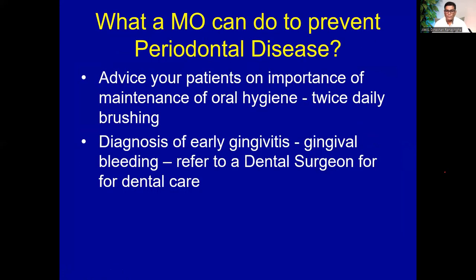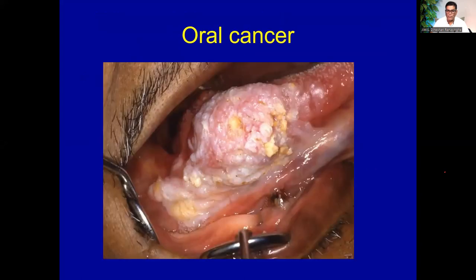What can we do as medical officers regarding periodontal disease? Advise your patients on the importance of maintaining oral hygiene and twice daily brushing. If you peep into the oral cavity to see mucosa or tonsils or tongue to check for anemia, and you see initial signs of gingivitis — gingival inflammation — refer that patient to a dental surgeon to get proper dental care to prevent it progressing into the severe form, which is called periodontitis.